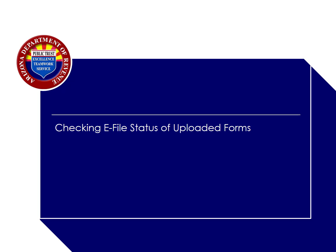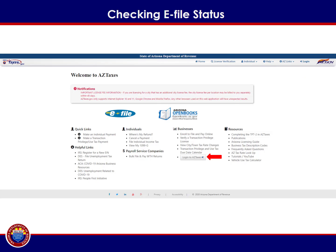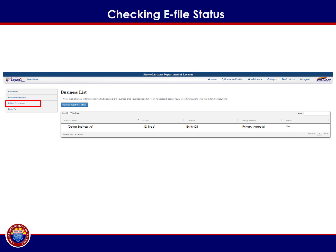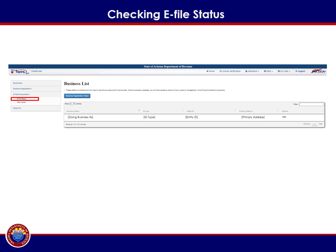Next, we will discuss how to check the e-file status of uploaded forms. From the aztaxes.gov home screen, select Login to Aztaxes. Login to your user profile by providing the username and password established during the aztaxes.gov new user registration process. After logging into your aztaxes account, select the e-file documents link from the menu bar on the left. This will open a drop-down menu that displays two options: e-file status and web upload. To check the status of your uploaded forms W-2 and 1099, select e-file status.